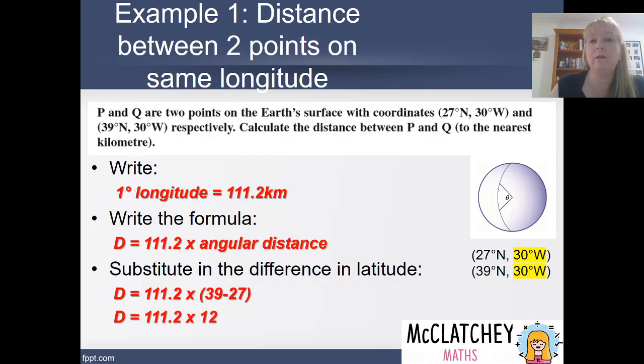Which is going to be 12 degrees. And therefore we get a distance between the two points P and Q of 1,334 kilometers. Now we did have to round that to the nearest kilometer, so I'll be rounding that one down.